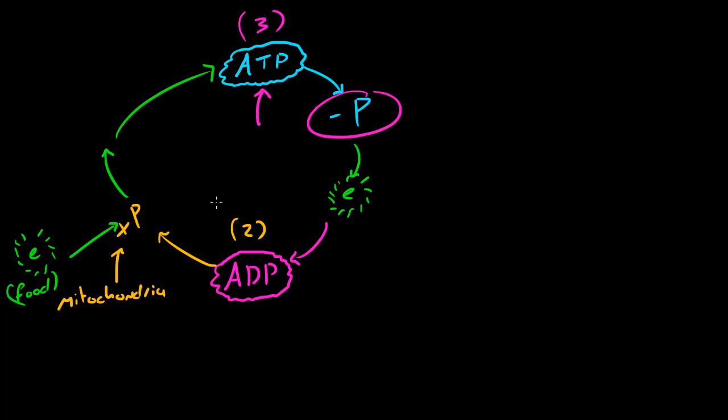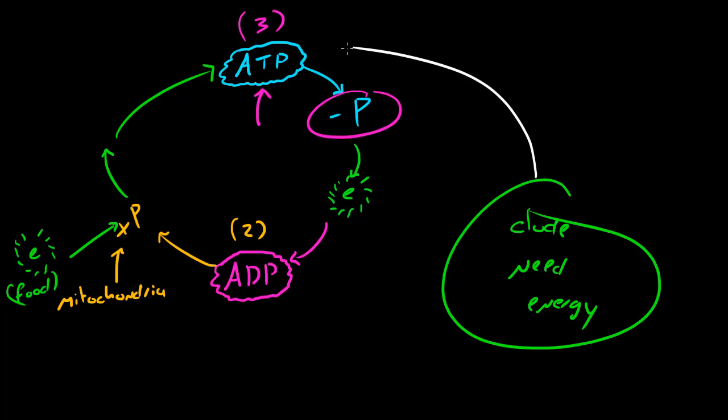So one more time, let me explain to you guys what happens. Whenever a cell is like, dude, need energy. So here's my little cell that needs energy right here. What happens is it talks to ATP, and ATP is like, alright, I can spare some energy by getting rid of a phosphate. So it does that, and then the energy heads over to the cell, and the cell uses it for whatever it needs.